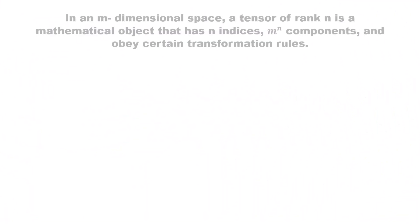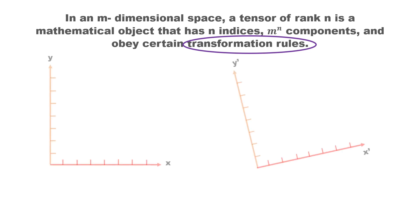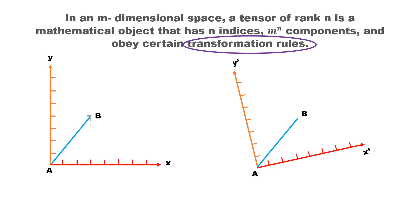In the definition of tensor, we had known that tensors are such mathematical objects that obey the transformation rule. According to this rule, on measuring any tensor in different frames, the component and basis vector of the tensor can change. But the tensor itself cannot change. Let us understand this for a first rank tensor.